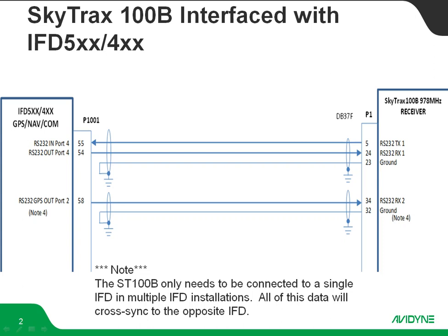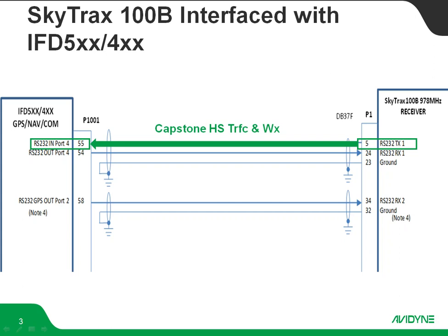Note that the Skytrax 100B does not need to be interfaced to both IFDs if you've got a dual IFD installation — all of this data will cross-sync from one unit to the other. On this first line we see capstone high-speed traffic and weather coming from the Skytrax 100B going out to the IFD. Also note that these ports are not set in stone; you can use any available RS-232 port on either the Skytrax 100B side or the IFD side.